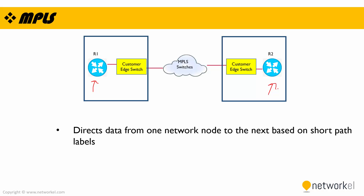MPLS is the most popular WAN technology right now. We can use PPP services, internet, Metro Ethernet, or point-to-point Metro Ethernet from MPLS, or we can use VPN technology. It is a very flexible and capable technology that we are using today.